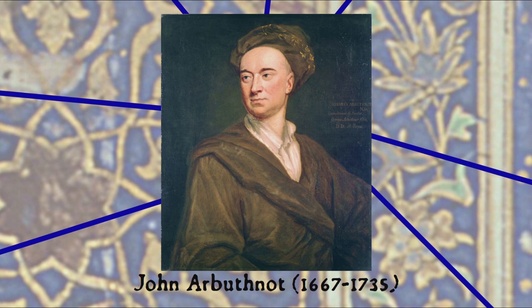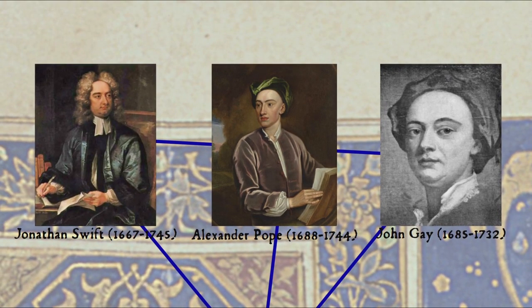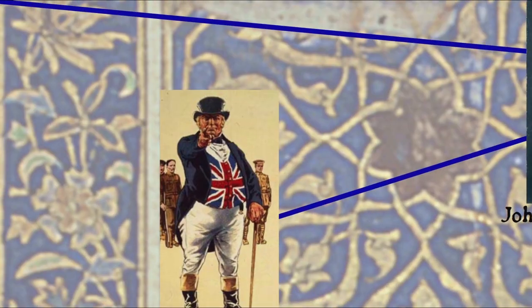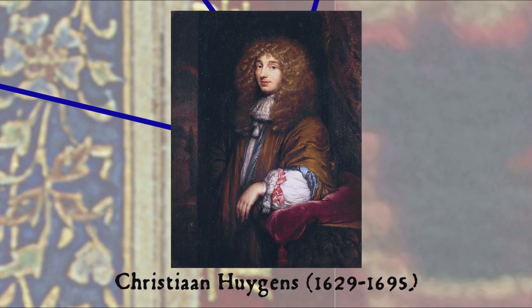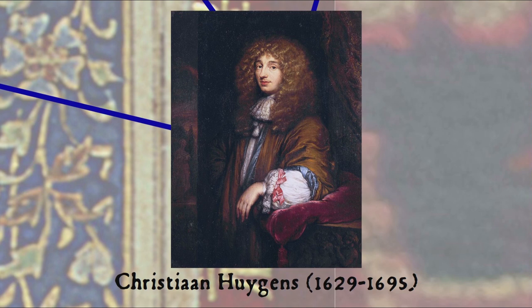Arbuthnot was a physician by trade who also engaged in literary and mathematical pursuits in his off time. As a writer he was a member of the early 18th-century Scriblerus Club, an informal association of authors including such satirical bigwigs as Jonathan Swift, Alexander Pope, and John Gay. Arbuthnot may have even provided inspiration for elements of Swift's Gulliver's Travels and Pope's The Dunciad. He also likely invented the English national personification John Bull, originally a figure of political satire. In more probability-related endeavours, he translated Huygens' book on probability, making it the first work on probability in English.